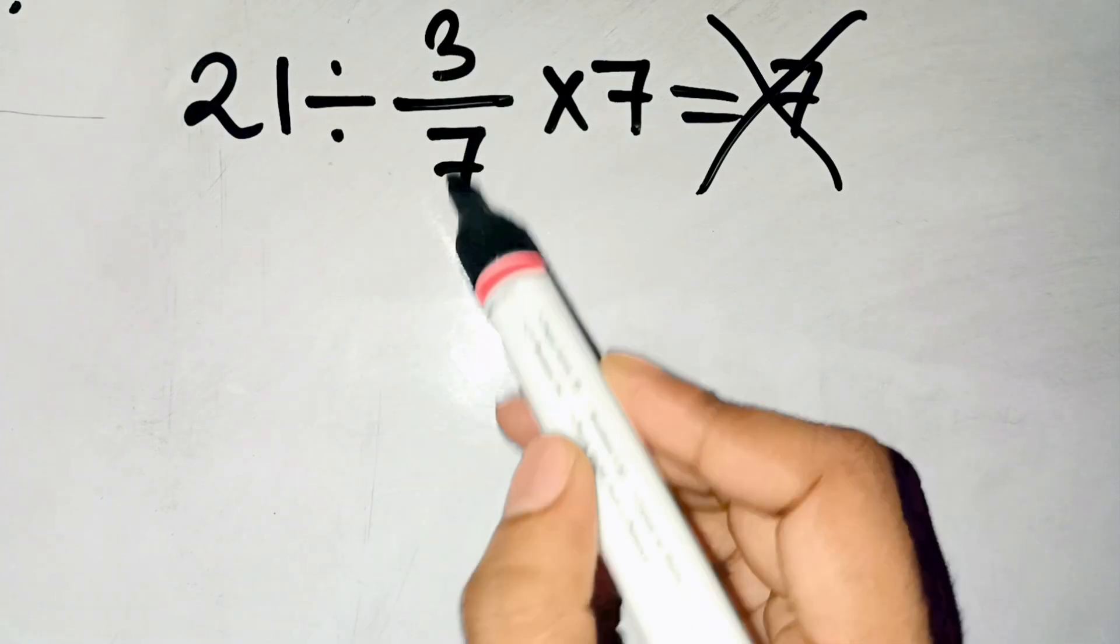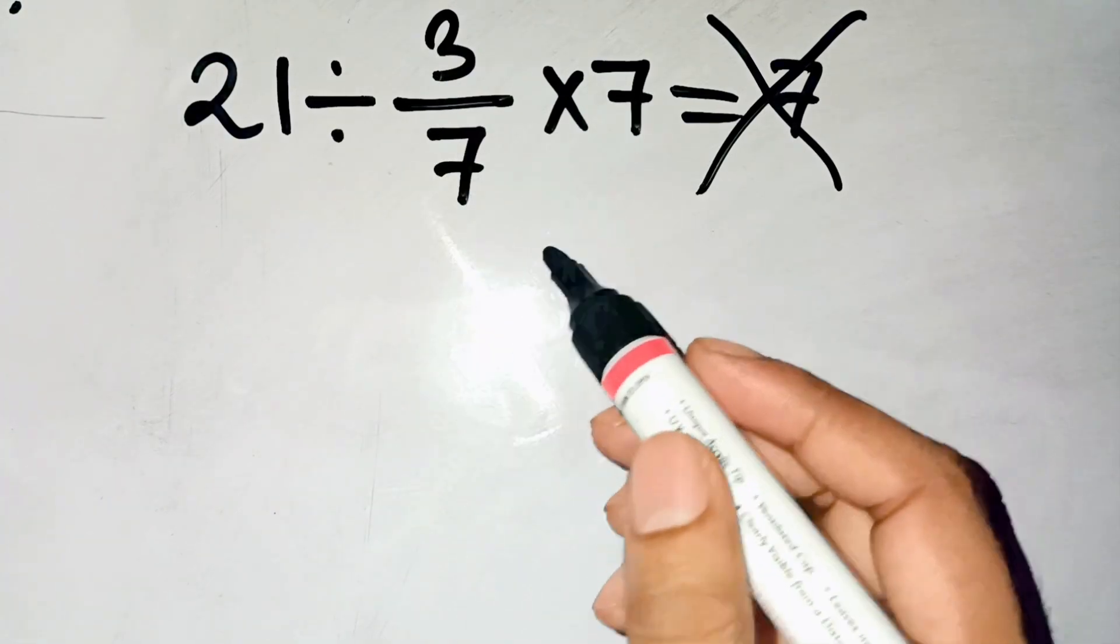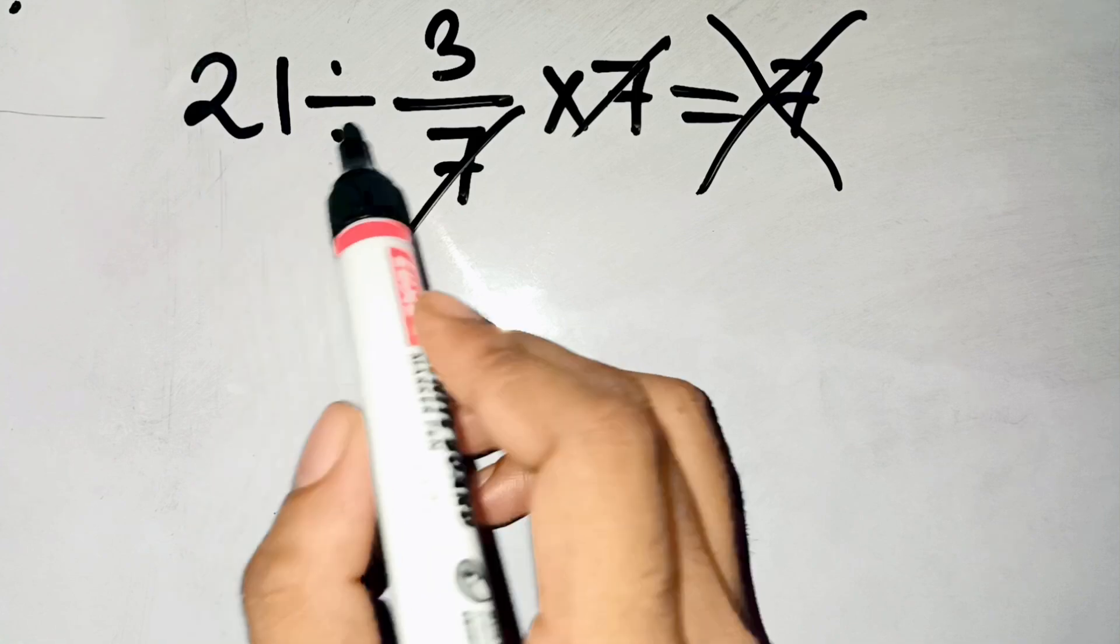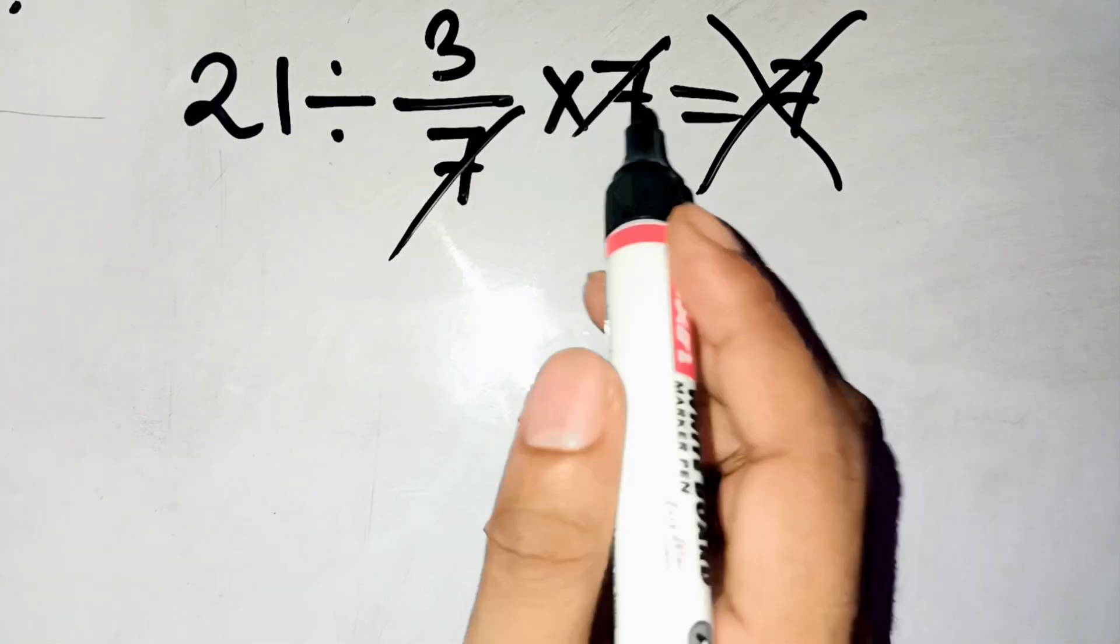You see 21 divided by 3 over 7 times 7, and your brain just goes, oh, the 7s cancel out, so it's just 21 divided by 3, which is 7. Easy.